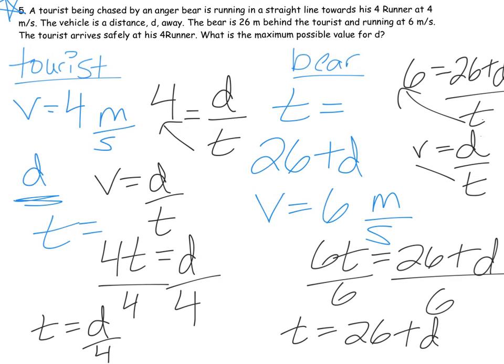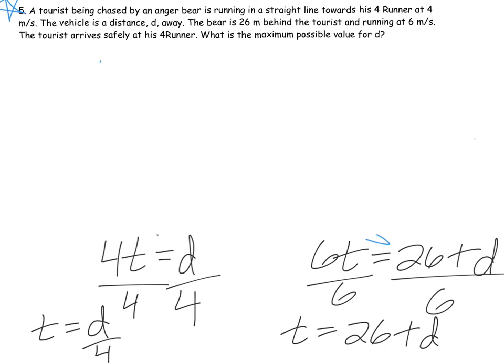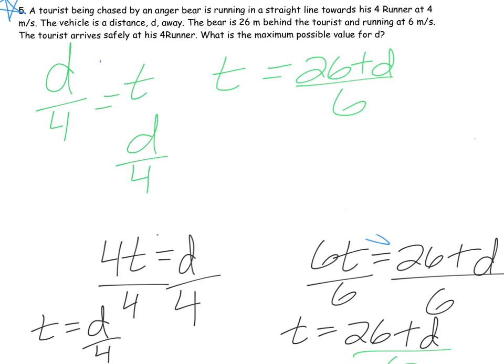Now that we've got both of them isolated for t, we can set them equivalent to each other. We've got d over 4 equals that t, and then t equals 26 plus d over 6. Now it's basically d over 4 is equal to 26 plus d over 6.